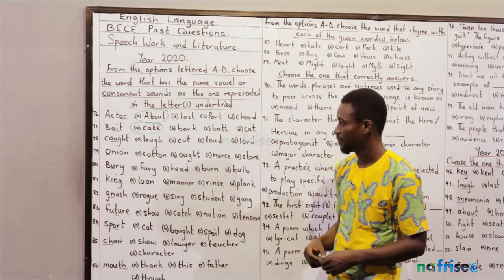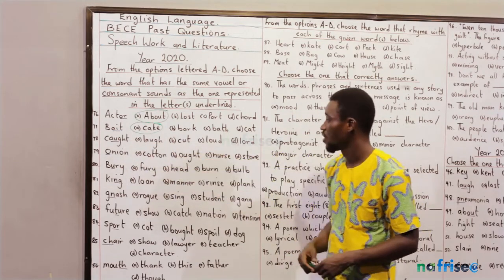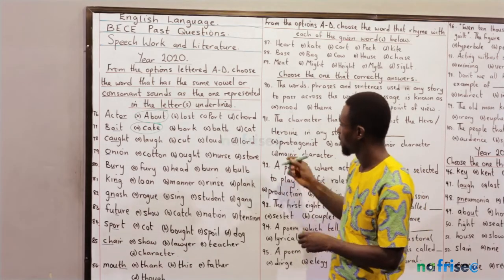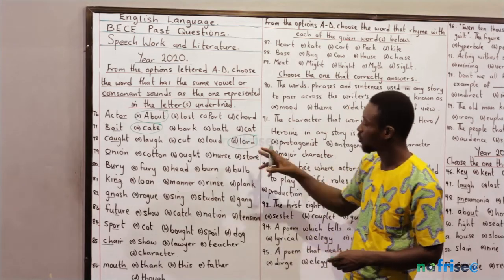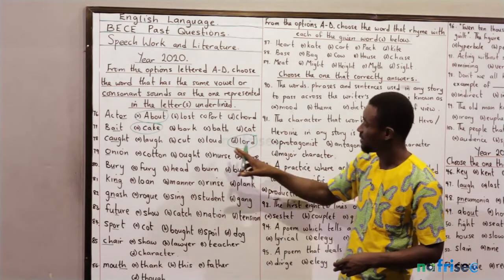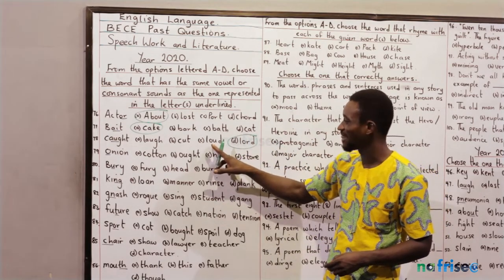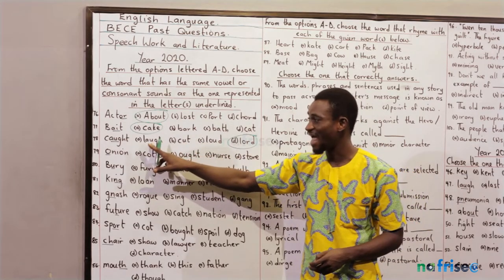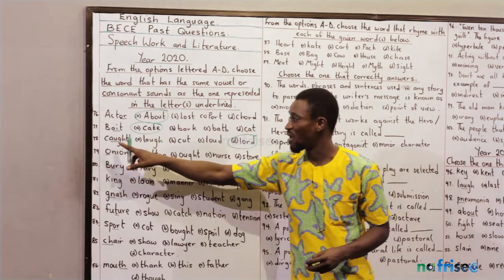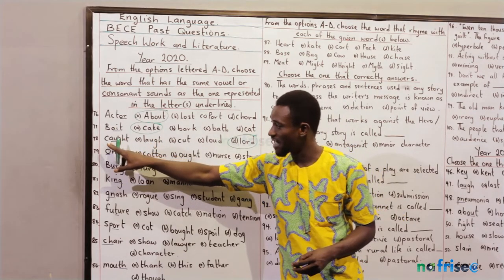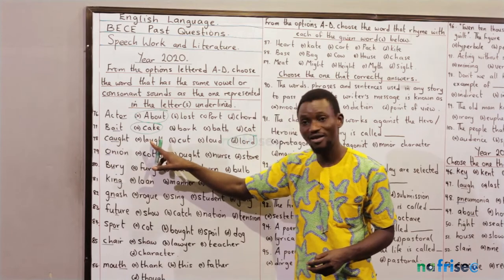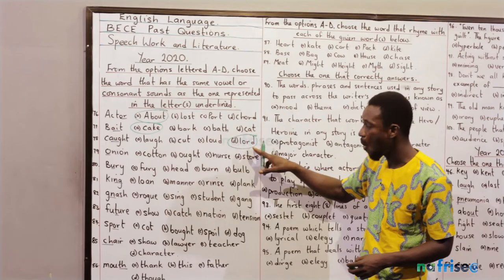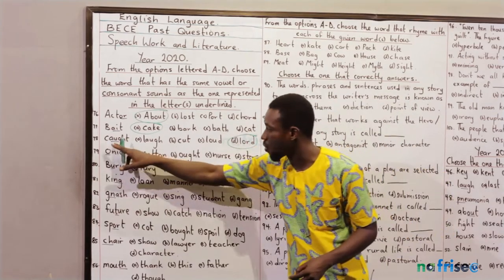Question 78 — 'caught.' That's the long /ɔː/ sound. Which option has that sound? That's option D — 'lord.' Option A, 'loud,' has the /aʊ/ sound. Option B, 'cat,' has the short /æ/ sound. Option C, 'laugh,' also has the /æ/ sound. So don't be confused by the letters A-U — 'caught' sounds /ɔː/, while 'loud' sounds /aʊ/. 'Lord' and 'caught' share the same long /ɔː/ sound.